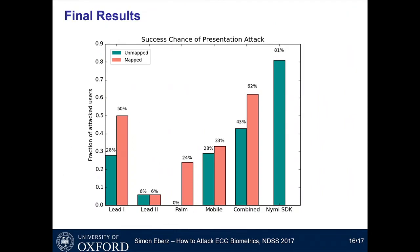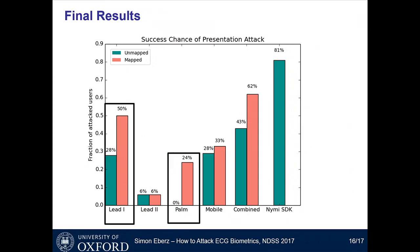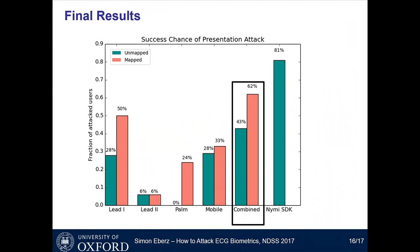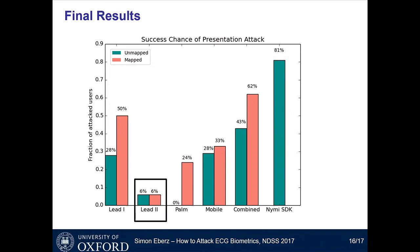These are our final results after applying the mapping function to our source ECG data before presenting it to the NYMI band. Especially for the palm and lead-one measurements — specific modes of the ECG monitor — success rates increase by a good margin. For the palm measurement, we go from 0% to 24%, making it a viable attack vector. This results in a combined success rate across all cross-device attacks of 62%. For some ECG data we are less successful, simply because the measurement location is very different and the signal is fundamentally a different signal.